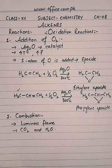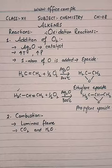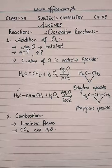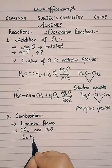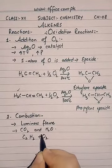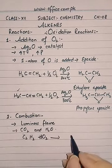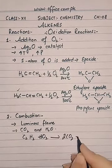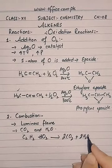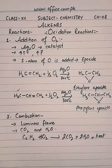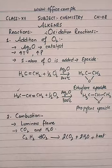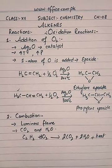Ethene is basically a very highly explosive mixture with air or oxygen. If you add ethene with excess oxygen, this is a very explosive reaction and it will give carbon dioxide plus water vapors and a lot of heat. It is a burning reaction, so it is definitely going to be very exothermic.